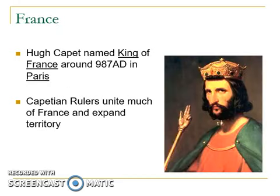Moving on to the nation-state of France: following the breakup of Charlemagne's empire, lands were ruled under the feudal system. France was divided into 30 feudal territories by the year 1000. Hugh Capet began as a small territory ruler and then came to rule all of France. A big advantage he had was his location right in the middle of major trade routes, which helped spread his power as trade picked up.